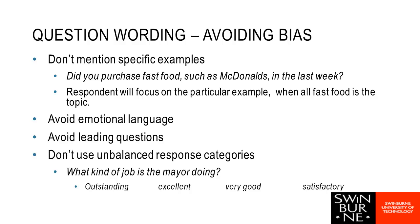Some things we want to watch out for to avoid bias: one is mentioning specific examples when we're not interested in specific examples. For instance, if I said 'did you purchase fast food such as McDonald's,' the person might just think about McDonald's, and when we ask further questions about fast food, we've already got them thinking about McDonald's — which is possibly not what we want. This can also be a problem with open-ended and qualitative questions.